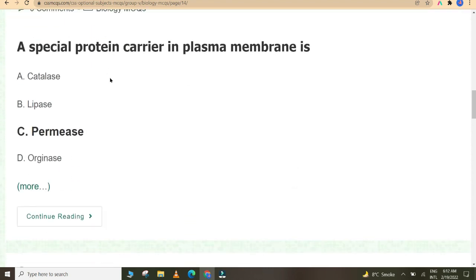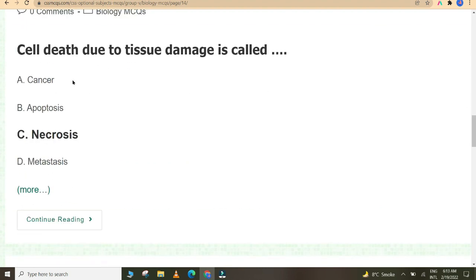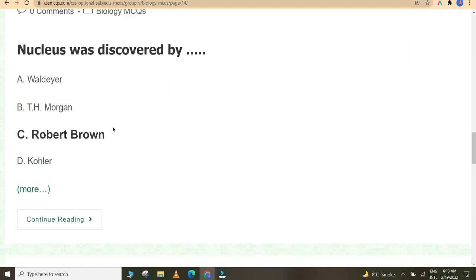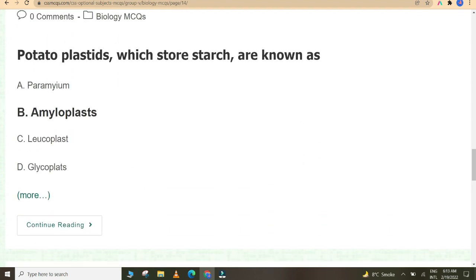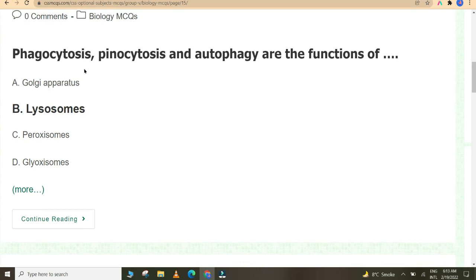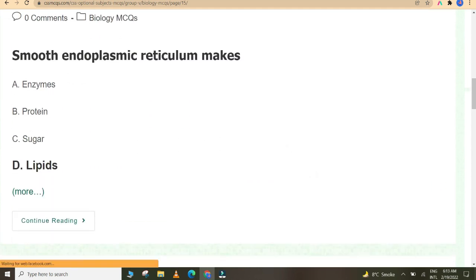A special protein carrier in plasma membrane is permease. Cell death due to tissue damage is called necrosis. Nucleus was discovered by Robert Brown. Potato plastids which store starch are known as amyloplasts. Polysaccharide cellulose is the building material of primary cell wall. Phagocytosis, pinocytosis, and autophagy are the functions of lysosomes. Smooth endoplasmic reticulum makes lipids.